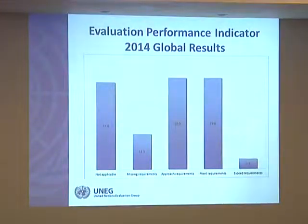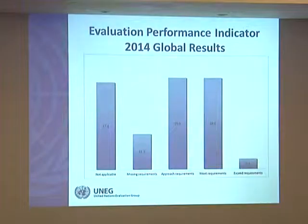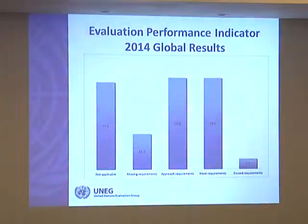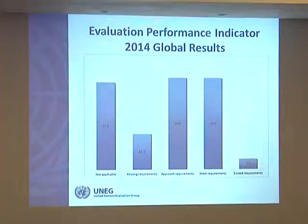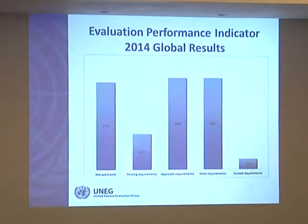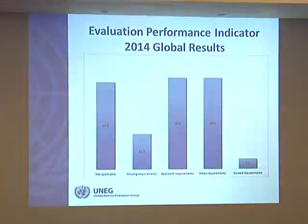For 2014, these are the global results in percentages. 27.4% of entities reported the indicator as not applicable, 11.3% reported missing requirements, 29% reported approaching requirements, and 29% met requirements. Only 3.2% — which is two entities — reported exceeding requirements. For instance, UN Women this year reported meeting requirements. It's not easy to exceed requirements on this indicator, as we will discuss later.